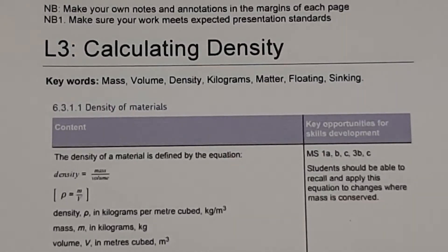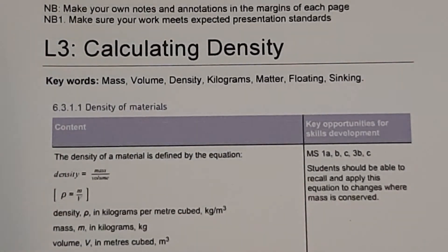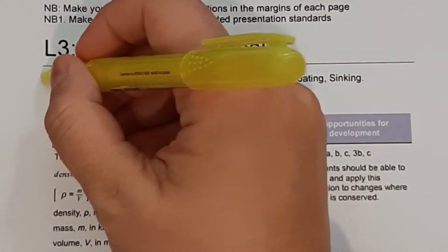Hello and welcome to GCSE Science with Mrs Castanera. This is lesson three, calculating density, and we're on the topic of the particle model of matter. Today's keywords are mass, volume, density, kilograms, matter, floating and sinking.